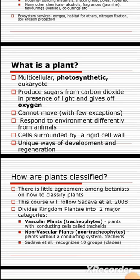Photosynthetic means the ability to make your own food. Plants are autotrophic, meaning they can make their own food. Because they are photosynthetic, they produce sugars from carbon dioxide in the presence of light and give off oxygen. Plants make use of the carbon dioxide in the atmosphere, producing oxygen. They cannot move locomotively, but with some exceptions — the locomotion part is not available, but some movement is.